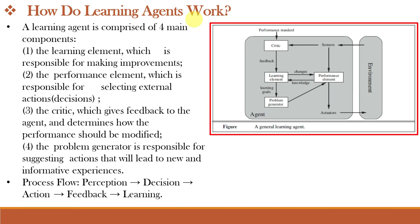Now let us see how learning agents work. A learning agent is comprised of four main components. Number one, the learning element, which is responsible for making improvements. Number two, the performance element, which is responsible for selecting external actions or making decisions. Number three, the critic, which gives feedback to the agent and determines how the performance should be modified — the critic identifies what is bad or wrong so the agent can improve. Number four, the problem generator, which suggests actions that will lead to new and informative experiences. The process flow is: first, perception or input using sensors; next, decision making; then action using actuators; and then feedback from the critic by comparison with the performance standard.